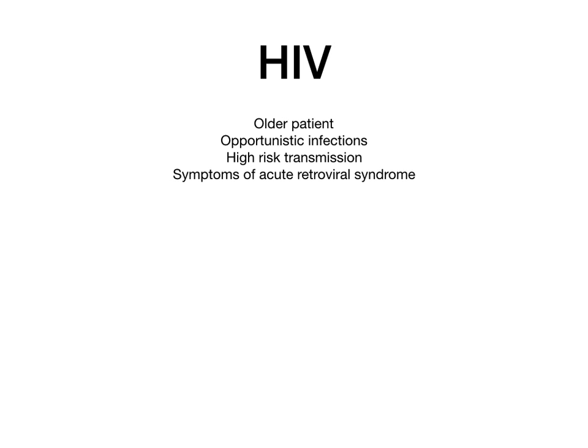For HIV, they would give you an older patient — never a child on USMLE or COMLEX. They would also describe opportunistic infections and other symptoms of acute retroviral syndrome, and mention patients at high risk for transmission. None of this appeared in the vignette, so it's not HIV, and therefore not CXCR4 — one of the three receptors HIV binds to.